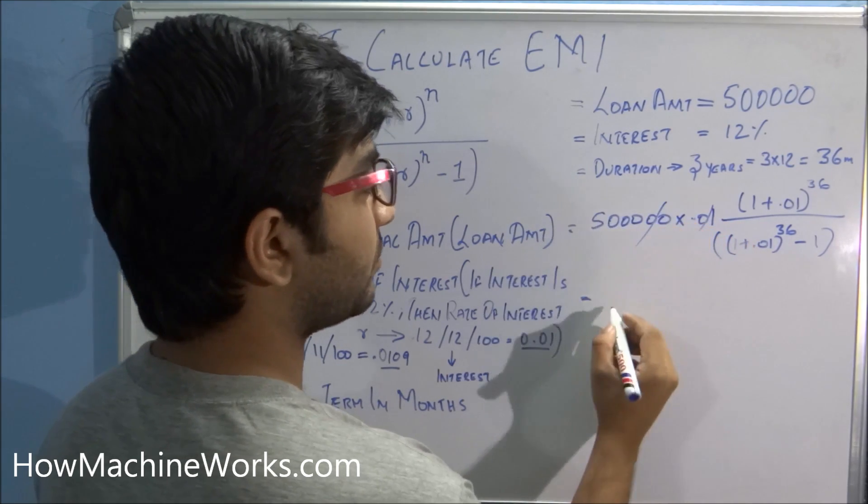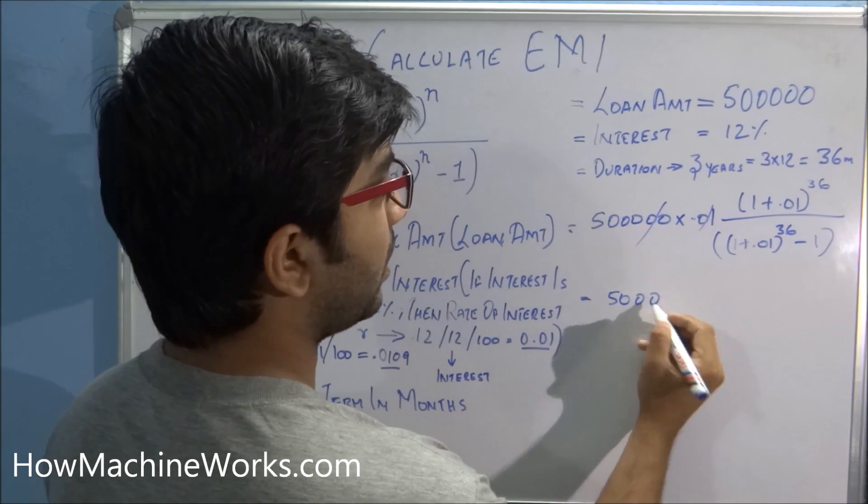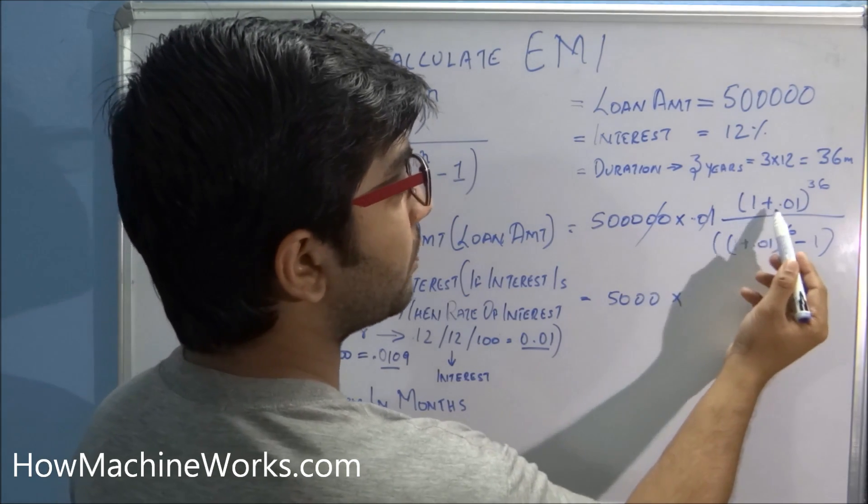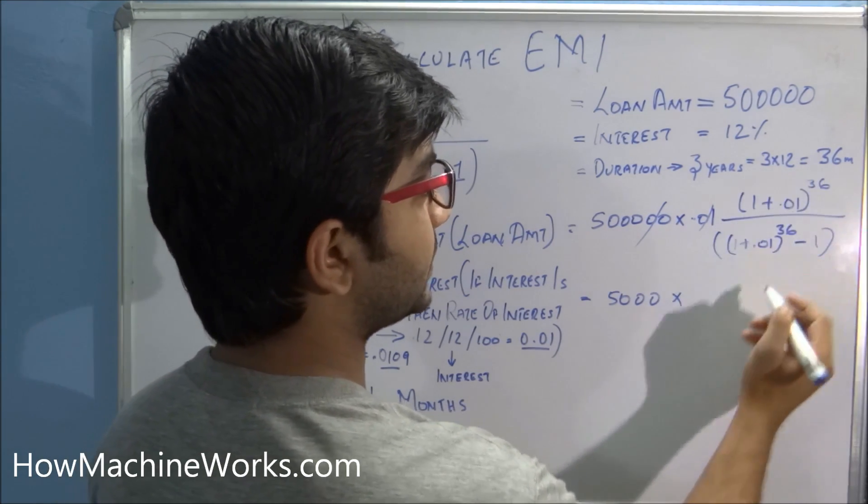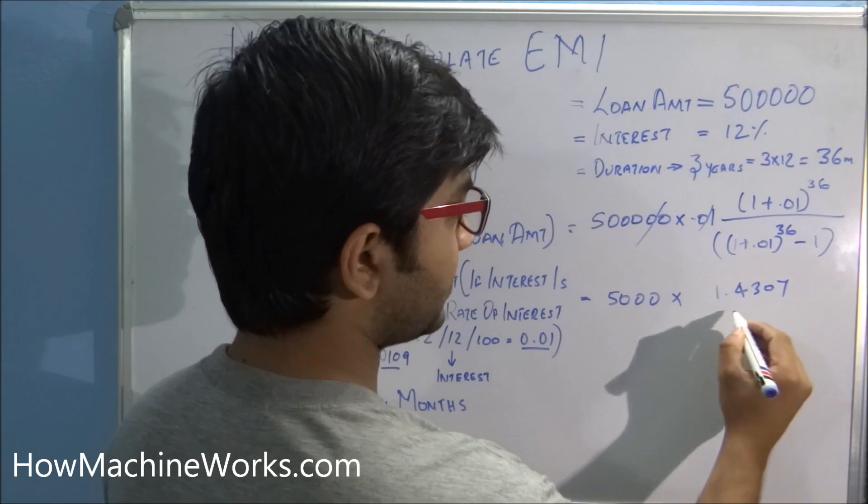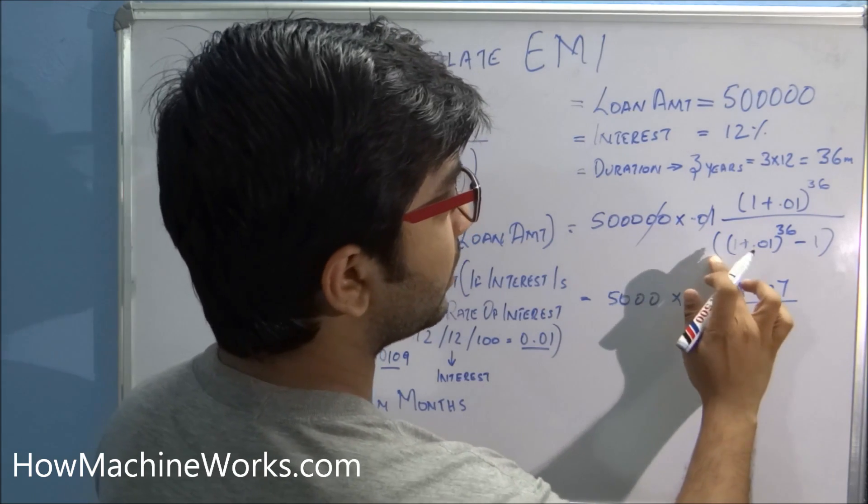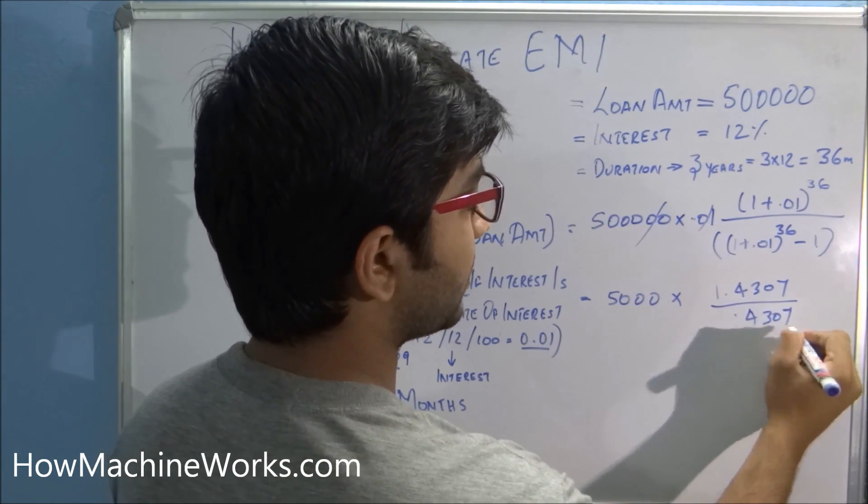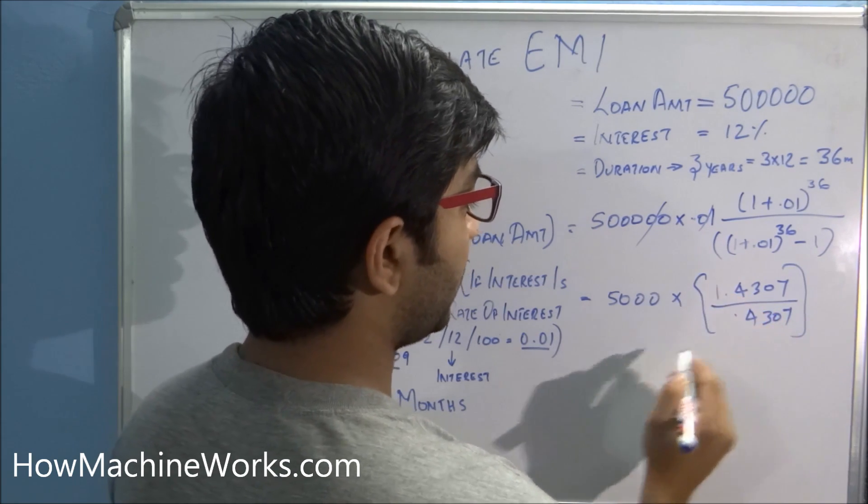(1 + 0.01) raised to 36 gives us the value 1.4307, divided by the value for this, that's minus 1, that is 0.4307.